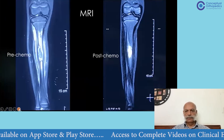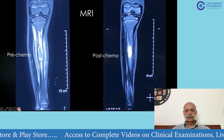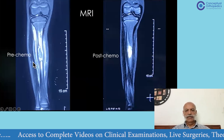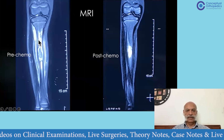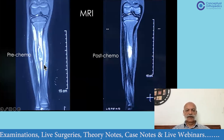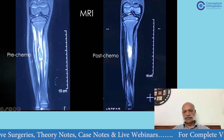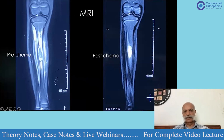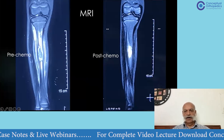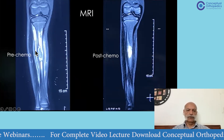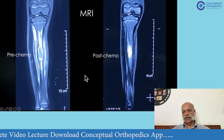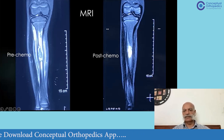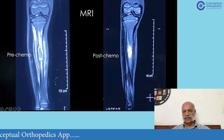We also performed a post-chemotherapy MRI. On the left is the pre-chemotherapy MRI showing extensive soft tissue involvement, periosteal elevation, and a severely enhancing lesion. On the right is the post-chemotherapy MRI. The periosteum is only slightly elevated now, much of the periosteal reaction has regressed, cortical enhancement has diminished tremendously, and the lesion is now localized within the bone.